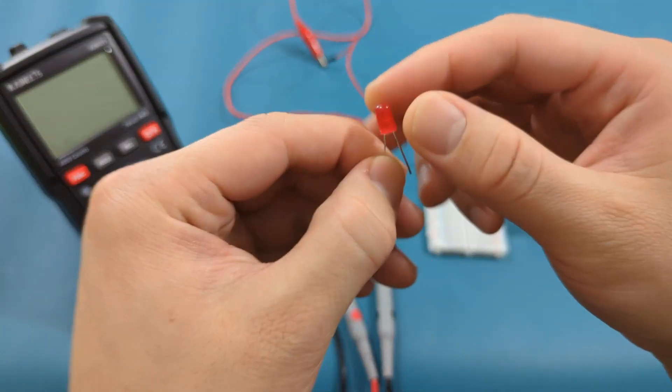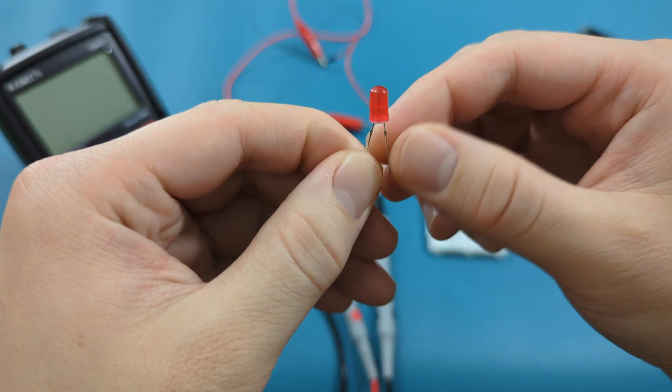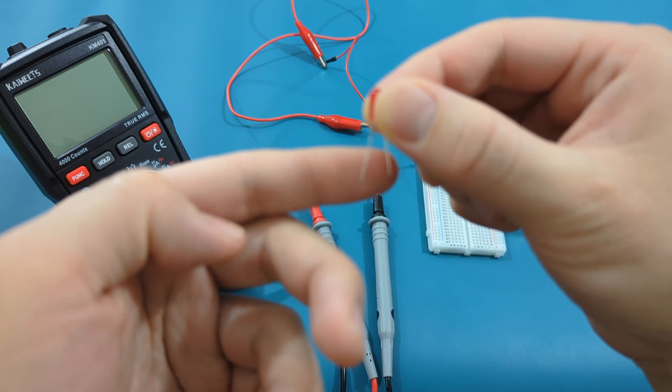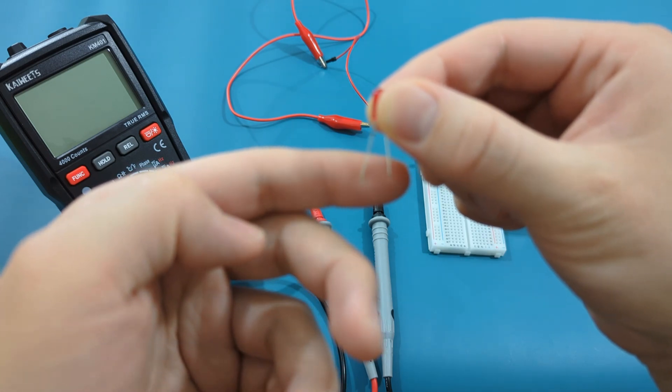This red LED diode has two protruding wires with one end slightly longer than the other one. The longer end is the positive terminal, and the shorter end is the negative terminal.